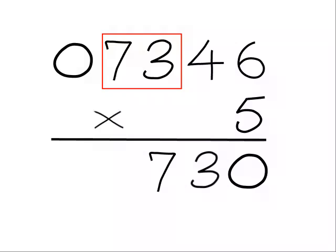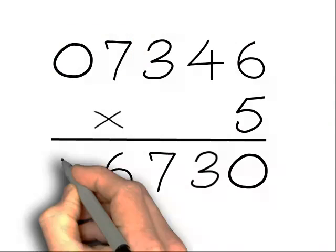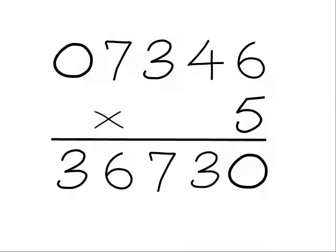Moving left, we're at 7. The neighbour is 3, so half of that is 1. 7 is odd, so we add another 5, giving us 6. So we write down the 6. Now we move over to the 0. The neighbour is 7, and half of that is 3. So we write that down.